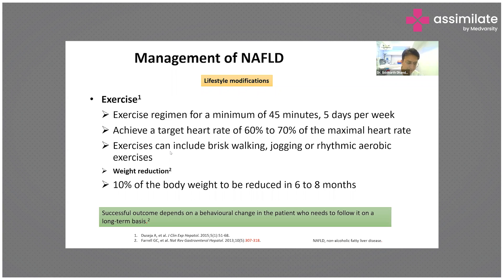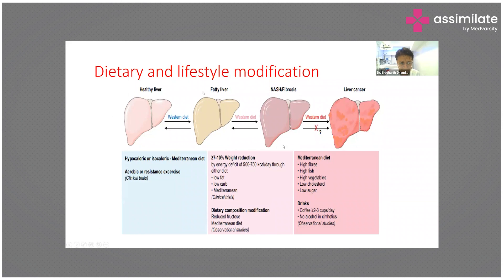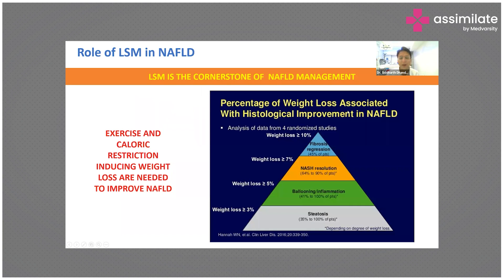Weight reduction of 10 percent of body weight should be achieved in six to eight months, which is practically very difficult. For weight reduction, dietary modification should create an energy deficit of 500 to 750 kilocalories. The diet should be low fat, low carb — preferably a Mediterranean-type diet — with inclusion of two to three cups of coffee and strict abstinence from alcohol.